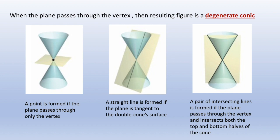And here we see an ellipse becomes a point, a parabola becomes a line, and a hyperbola becomes two intersecting lines.